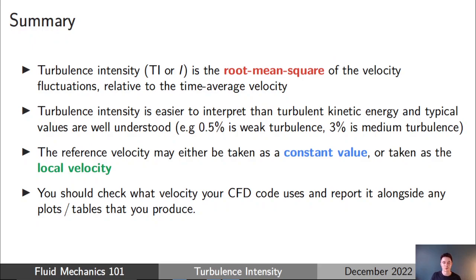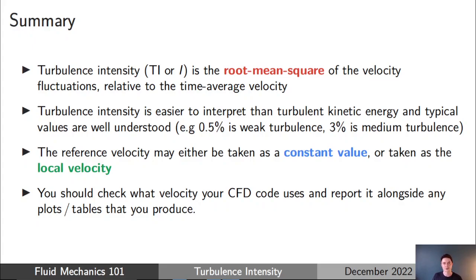To summarize: turbulence intensity is physically the ratio of the root mean square of velocity fluctuations to the time-averaged velocity magnitude at a point in a turbulent flow field. This definition is useful for interpreting turbulent kinetic energy and the strength of turbulence, but it doesn't tell us anything about the structure or distribution of turbulent kinetic energy among scales. As engineers, we can use either a constant reference velocity or the local velocity — and it's really important to be clear which definition you're using and to report that alongside your results.